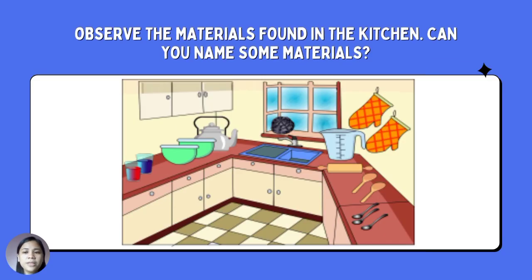Properties are distinctive characteristics that describe an object or material. These properties of materials determine their uses and importance. These properties may be observed directly or indirectly.